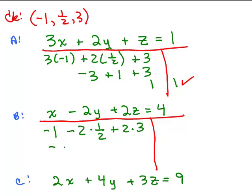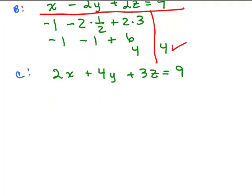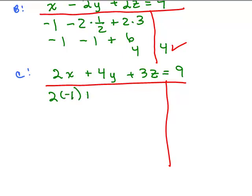Checking equation C: plugging in negative 1 for X, one half for Y, and 3 for Z gives negative 2 plus 2 plus 9, which equals 9 on both sides. That checks. The solution (-1, 1/2, 3) is verified in all three equations.